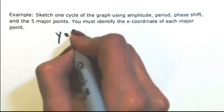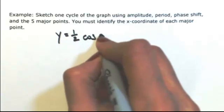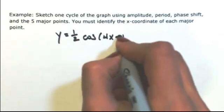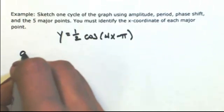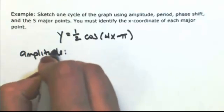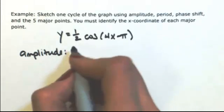Let's say our function is y equals one-half cosine of four x minus pi. The first thing we're asked is for the amplitude. So looking at the number in front of our cosine function, one-half.